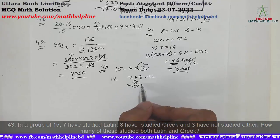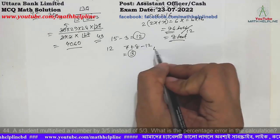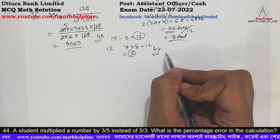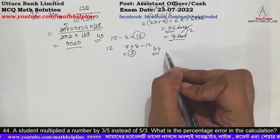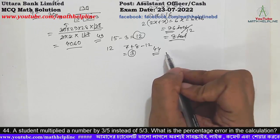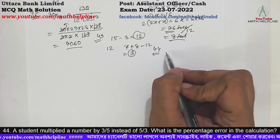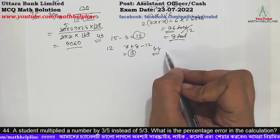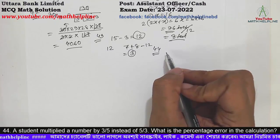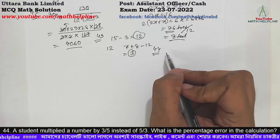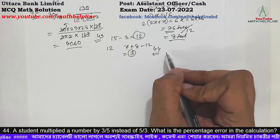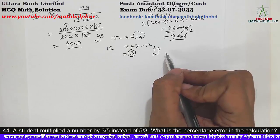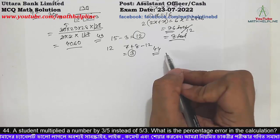The answer to number 43 leads us to problem number 44: A student multiplied a number by 3/5 instead of 5/3. What is the percentage error in the calculation?